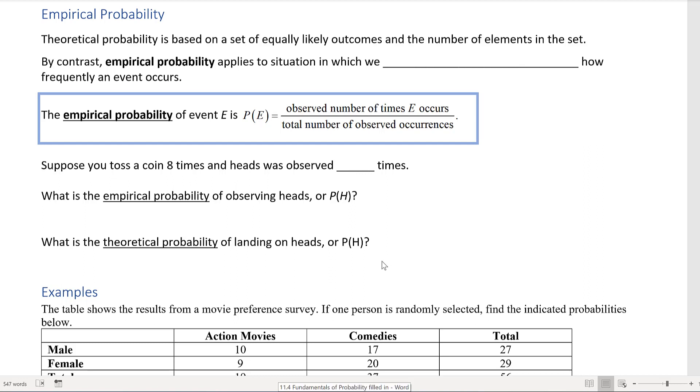So far we've only been talking about theoretical probability. In our heads we're thinking how many different ways could this happen. But there's another type of probability called empirical probability. Theoretical probability is based on a set of equally likely outcomes and the number of elements in each set.